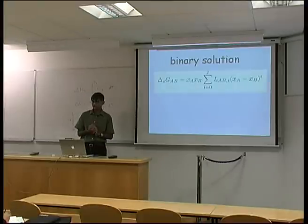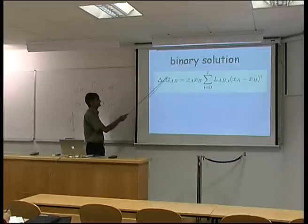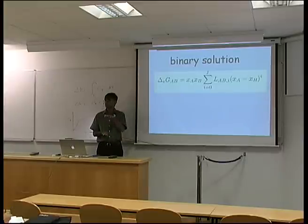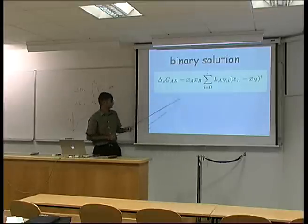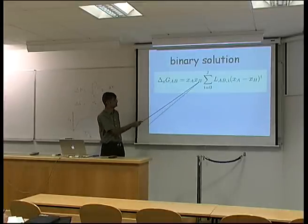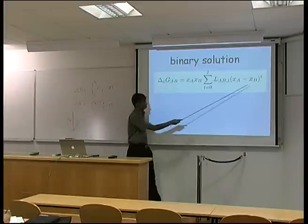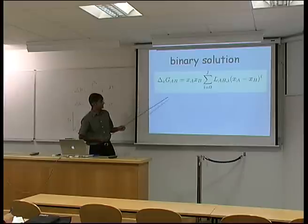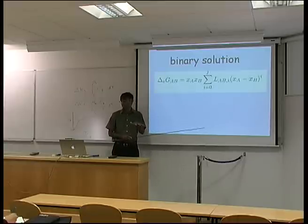So in your thermodynamic database, you would have a set of coefficients. This is what I mean by coefficients. These are fitted to experimental data. Okay? Once we have defined the free energy, this again is the excess free energy. That means the deviation of the free energy from the free energy of mixing for an ideal solution. And this is how we write that. This is another polynomial equation.